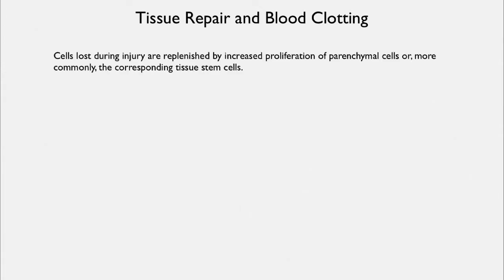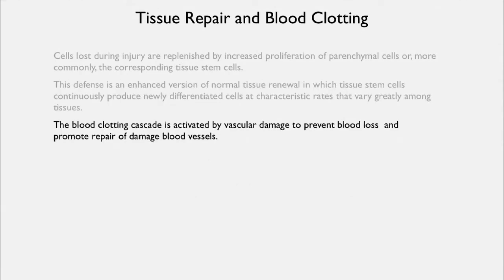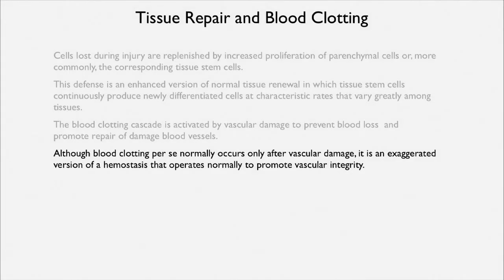What about tissue repair and blood clotting? This is what will happen if you get injured in a fight or don't get away from a predator. The cells lost during injury are replenished by increased proliferation of parenchymal cells or recruited tissue stem cells. This is an enhanced version of the normal tissue renewal in which stem cells continuously make newly differentiated cells, occurring at different characteristic rates in different tissues. The blood clotting cascade is activated by vascular damage and prevents blood loss while promoting repair of damaged blood vessels.